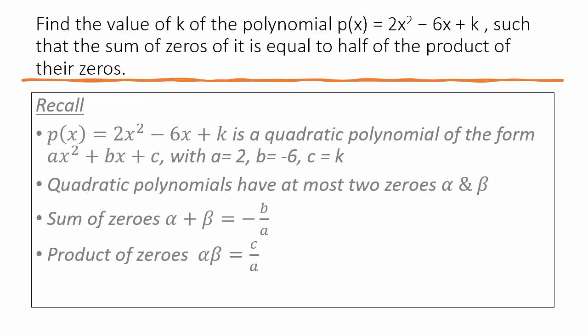ax² + bx + c is a quadratic polynomial. 2x² - 6x + k is a quadratic polynomial of the form ax² + bx + c. Once I have noted that, then you will see that a is 2, b is -6, c is equal to k.